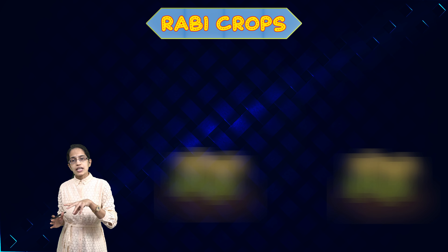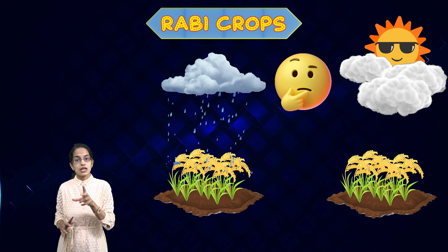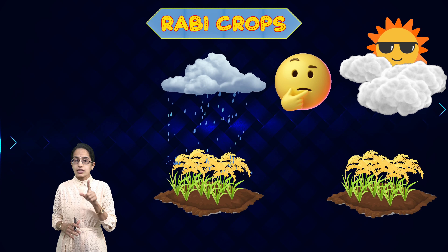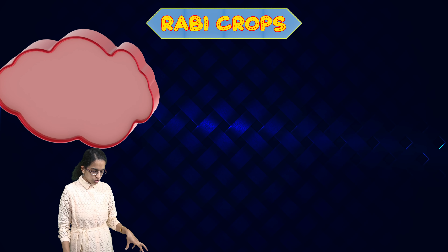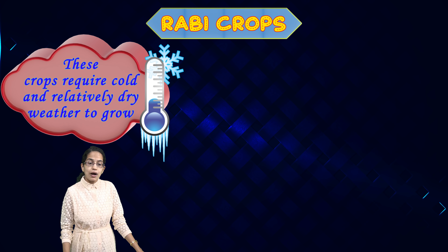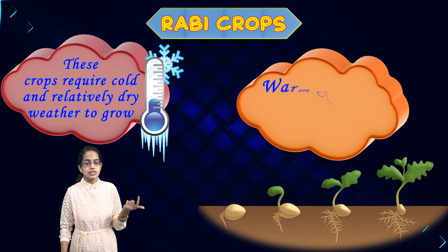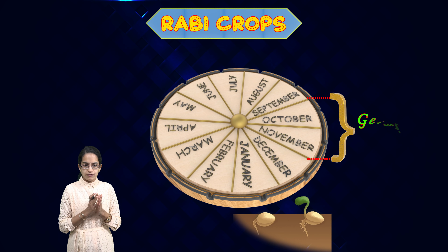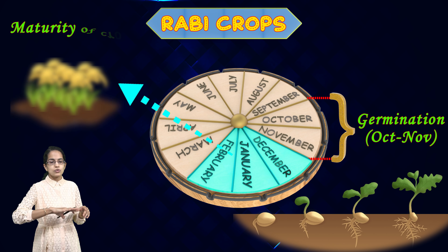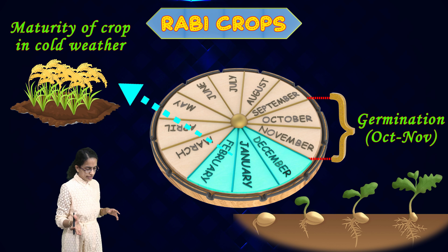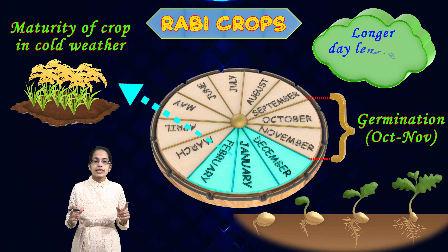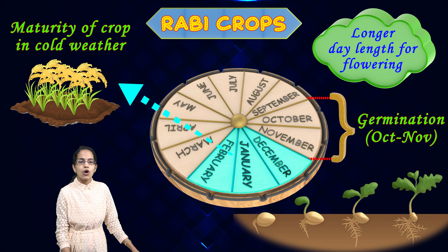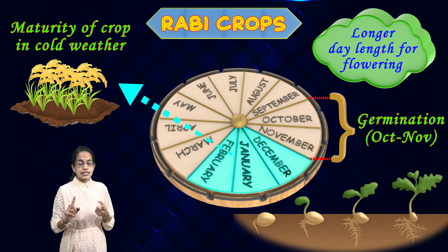The next is the Rabi season. If there are unusual weather conditions with unusual rainfall patterns, that would affect the Rabi crop, because the Rabi crop is grown in cold climate but the germination process starts during the warmer months. It is usually October to November where germination occurs, and during the whole cold season the maturity of the crop is seen. Also, a longer day length is observed in the Rabi season for flowering.